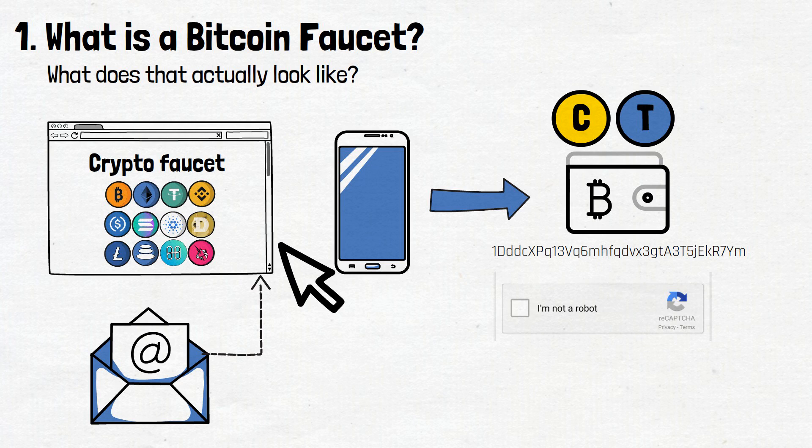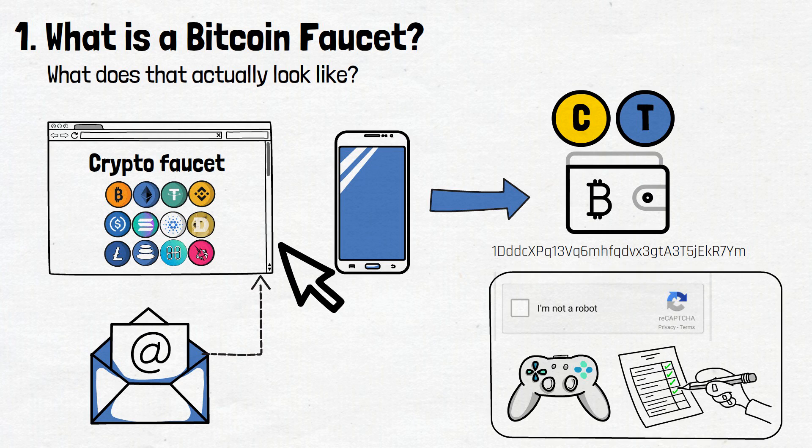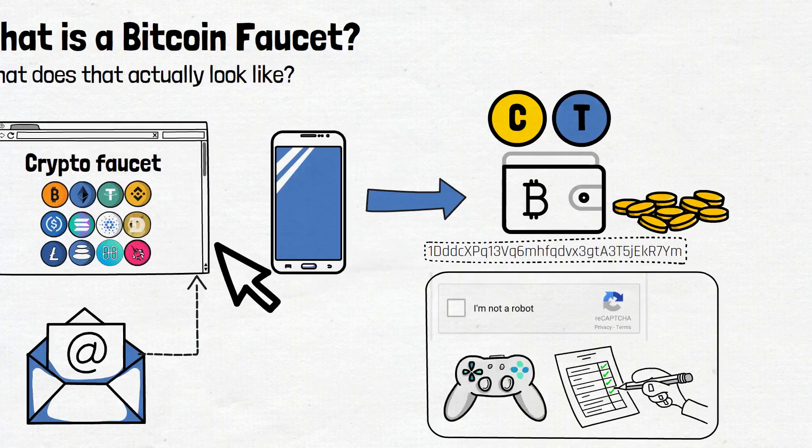Then, you'll solve a captcha, play a quick game, or perform any other fast and easy task. After that, the crypto faucet will send tiny amounts of crypto to the wallet address you provided.